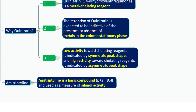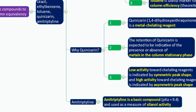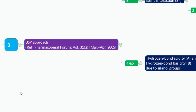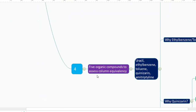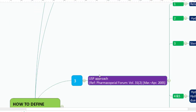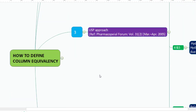This is the purpose of using these five compounds to assess column equivalency as per USP. We have covered the reasons for using five different compounds and how one can prove column equivalency using six selectivity parameters. Thank you very much for watching, and I will meet you soon with more useful and informative videos. Take care and bye-bye.